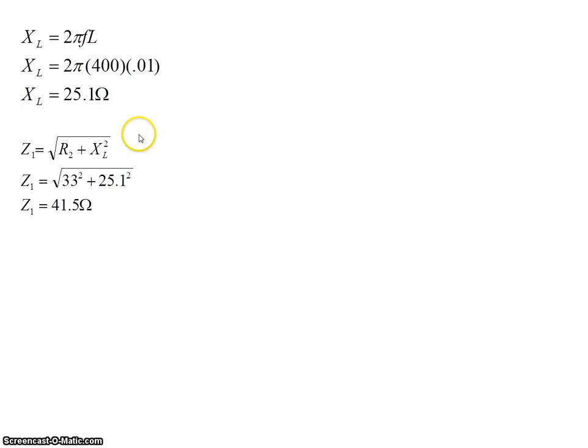The total impedance of that branch then is the resistance squared by the reactance squared. So the resistor was 33 and this is 25.1. That gives an impedance of 41.5 ohms. The current is just Ohm's law. It is the supply voltage which was 115 volts divided by our value of Z here. That gives me 2.8 amps.